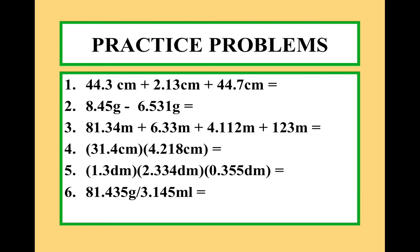It looks like the first three are all addition or subtraction. And then the last three, you have multiplication, division. If we look at number five, notice that we have three numbers. Here, we want to look for the number that has the least number of significant figures.